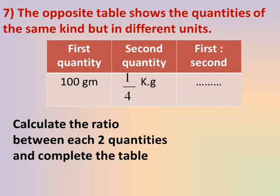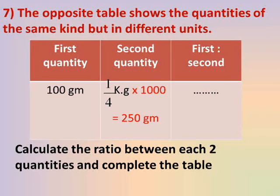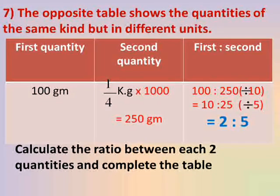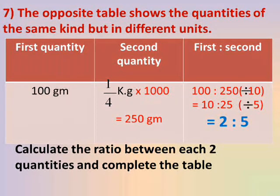Number 7: The table shows quantities of the same kind but in different units. A ratio is a comparison between two quantities of the same type and unit. We convert from the larger unit to the smaller. First entry: convert quarter kilogram to grams — quarter kg × 1000 = 250 grams. The ratio is 100 grams to 250 grams, simplified: cancel zeros to get 10 to 25. Both divisible by 5: 10 ÷ 5 = 2 and 25 ÷ 5 = 5. Simplest form is 2 to 5.